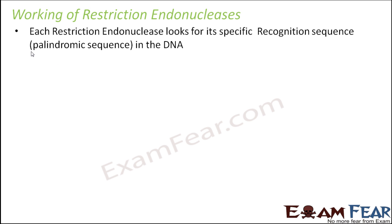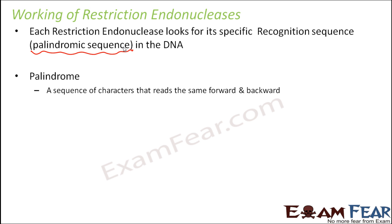Now here you see a new term called palindromic sequence. What is this palindromic sequence? If you have observed carefully, the recognition sequences for BAMH1 and ECOR1 have a special feature — they are the same when you read them from both ends. That kind of sequence is called a palindromic sequence. So first let us understand what is a palindrome. A palindrome is a sequence of characters that reads the same forward as well as backward.